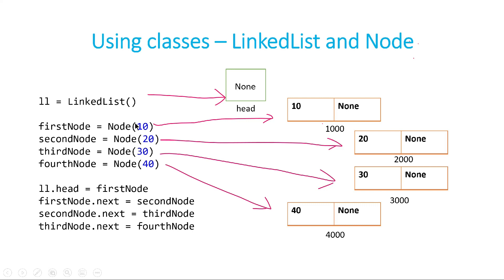When we create the second node by calling Node(20), it calls the constructor of Node class. In the variable data it puts 20, and in the next variable it keeps None initially. Similarly we have created four instances of Node class with data 10, 20, 30, and 40. You can see what is happening in memory — suppose the first node is stored at address 1000, the second at 2000, the third at 3000, and the fourth at 4000. Now the line ll.head = first_node stores 1000 in ll.head, so instead of None, head is now pointing to the node at 1000.